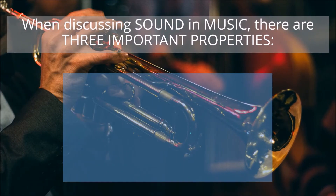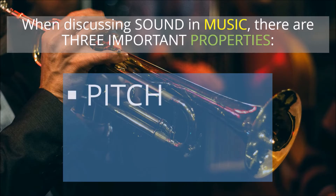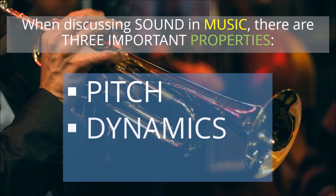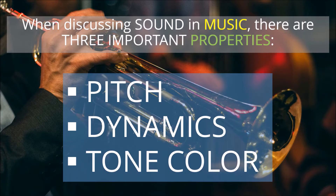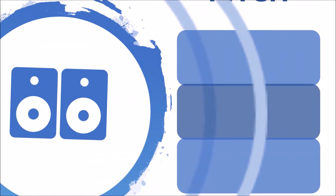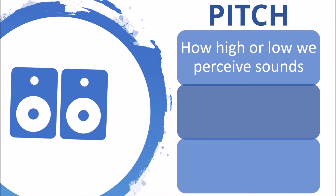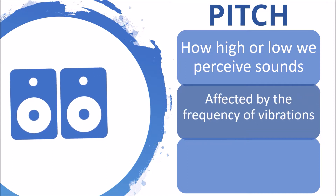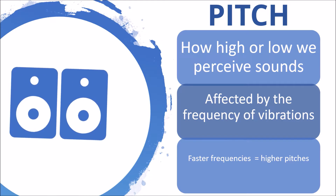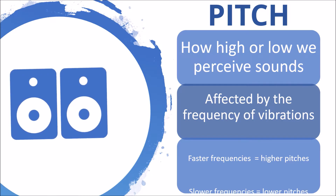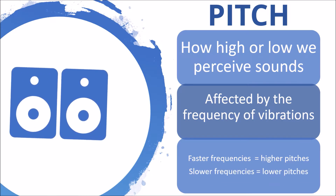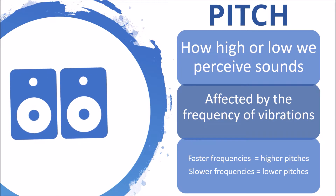When discussing sound in music, there are three important properties: pitch, dynamics, and tone color. Pitch is defined as how high or low we perceive sounds. Pitch is affected by the frequency of vibrations. Faster frequencies of vibrations produce higher pitches, while slower frequencies of vibrations produce lower pitches.